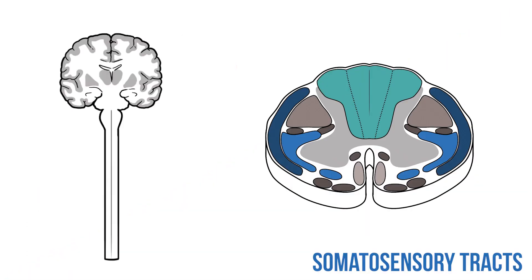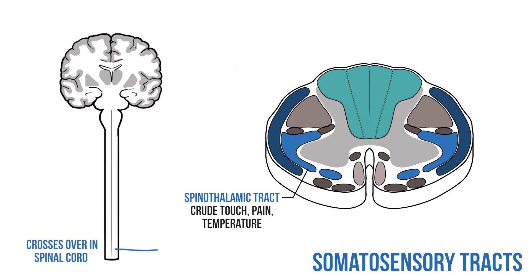Let's draw those two cortical pathways out. The spinothalamic tract travels into the cord and crosses over at or close to its point of entry. It then travels up the contralateral side of the spinal cord before synapsing in the thalamus. Finally, nerve fibers pass from the thalamus to the somatosensory cortex.